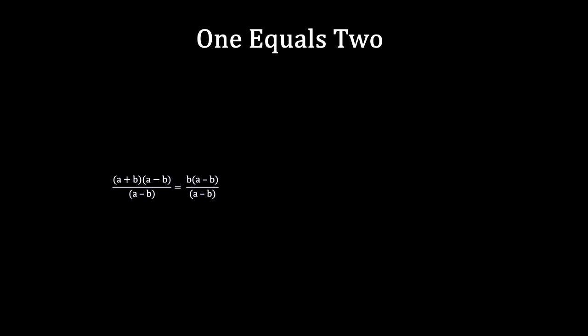This happened because we divided both sides of the equation by a minus b, which equals zero. In this way, dividing by zero is like a box of chocolates. You never know what you're going to get. A closer look at the number zero will explain why.